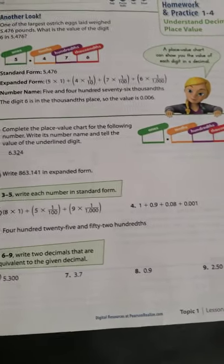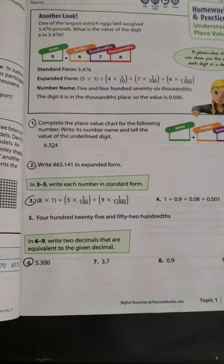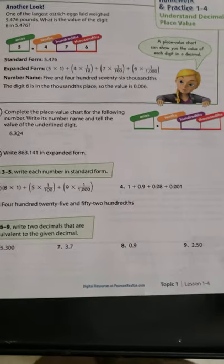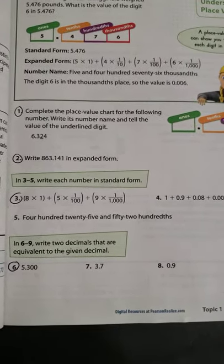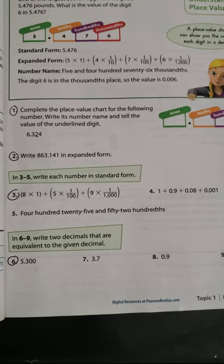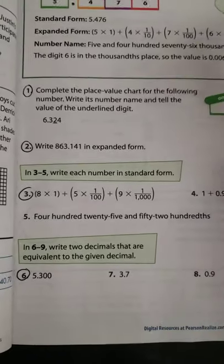All right, guys, we're on page 27 in the math book. I'm going to go over a handful of these to try to give you some help. Number one says, complete the place value chart for the following number. So that's the first thing we're going to do.